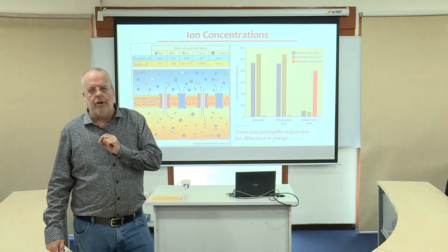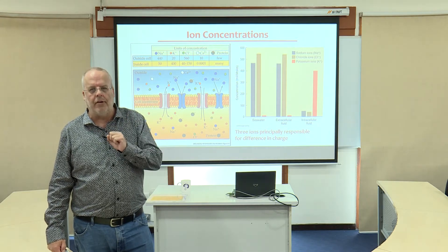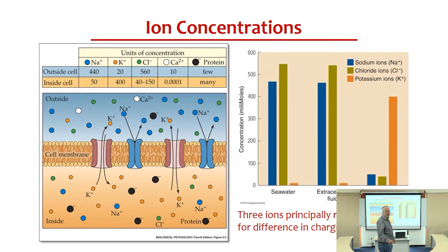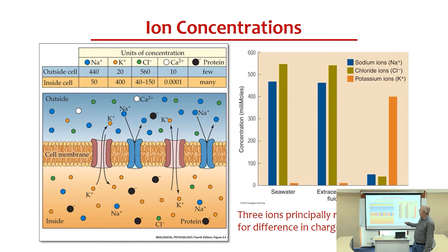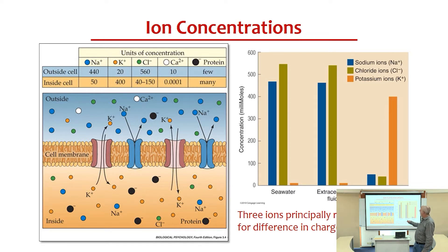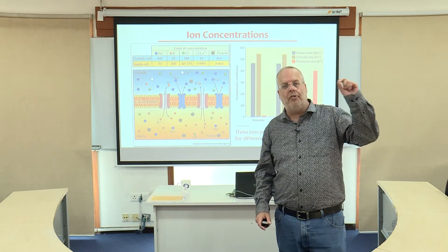When we look at these ions, there are three in particular that we're going to focus on — these are largely responsible for the difference in electrical charge. First, we have sodium, abbreviation Na+; that plus sign tells us it's a positively charged ion. There is significantly more — almost 10 times as much — sodium outside the neuron than inside. If we look at potassium, abbreviation K+, another positively charged ion, we find 400 inside versus 20 outside — almost 20 times as much potassium inside than outside. Finally, we have chloride, Cl-, a negatively charged ion: outside 560, inside 150. So there is more chloride outside the cell than inside.